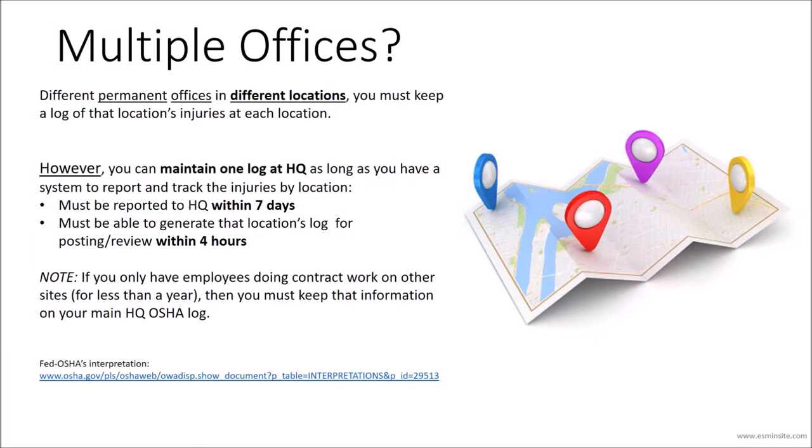For organizations that have multiple offices, the OSHA rule states that if you have multiple permanent offices, you must maintain a log at each of those different locations. However, you are allowed to maintain one log at your main office, given you comply with these two rules. First, injuries that occur at other locations must be reported to the main office and recorded on the OSHA 300 log within seven days.